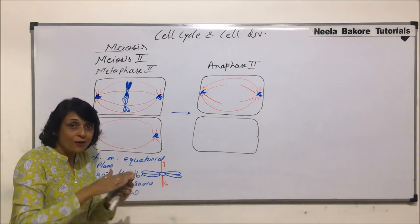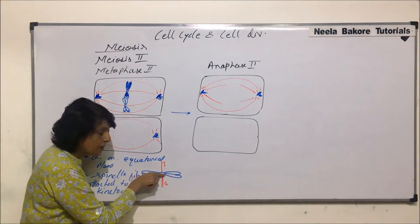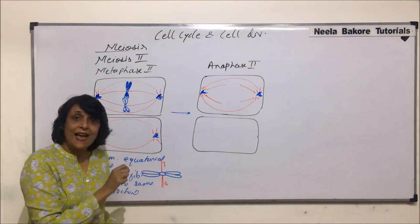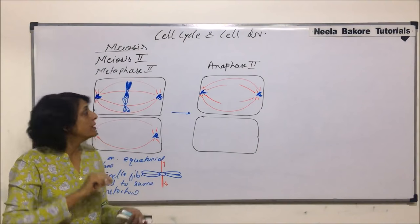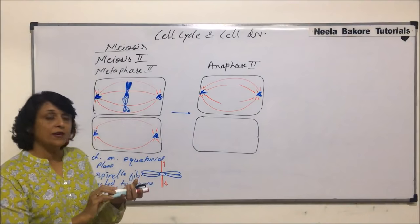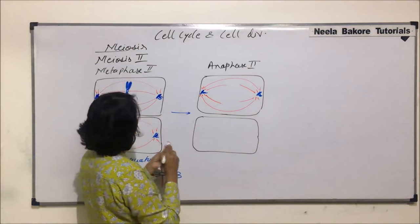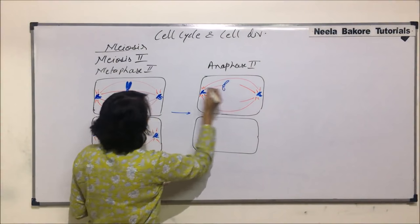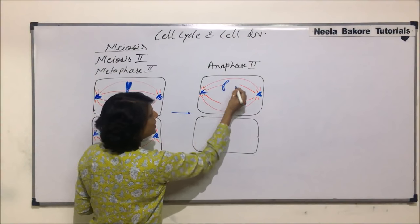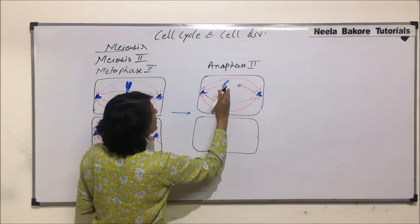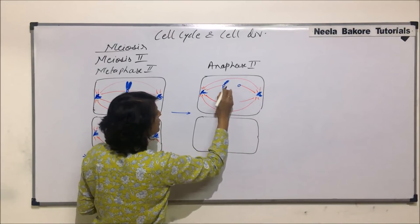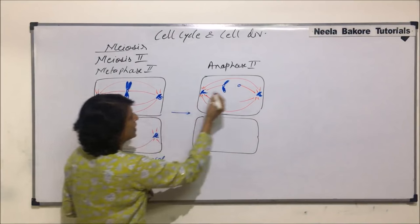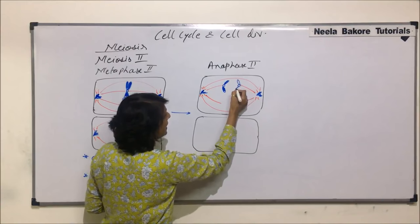These two chromosomes are going to split now by splitting of the centromere. These two arms or chromatids are attached to the same centromere. So when these fibers contract, the centromere is going to split. When this centromere splits, I am drawing this chromosome — this arm is here. This was the solid one, which means it has this exchanged genetic material, and here also.